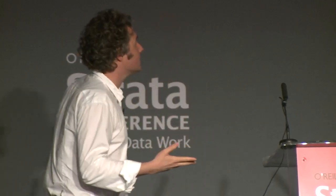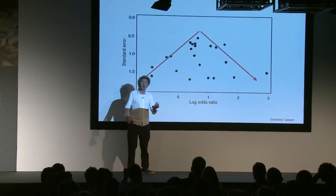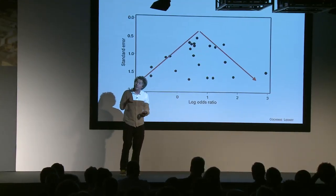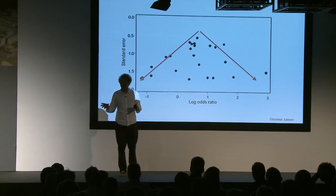Data goes missing. You can demonstrate that data has gone missing in two ways — with statistics or with stories. This is one way of showing the presence of publication bias: showing that negative trials, trials with unflattering results, have gone missing in action.